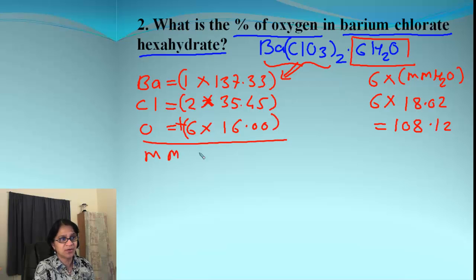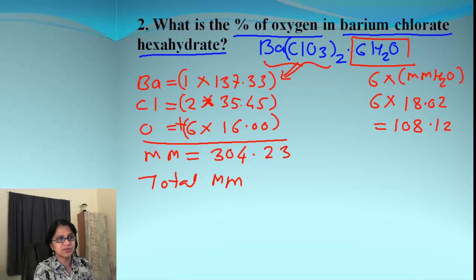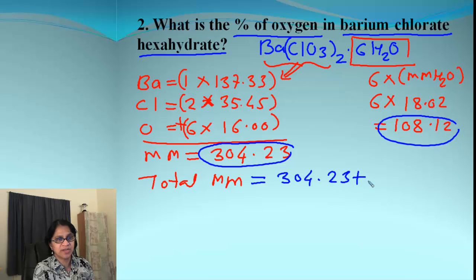And when you multiply and when you add all of those what you get is total molar mass due to barium chlorate which I'm getting as 304.23. Now remember the total molar mass for the compound is adding these two together. This and this together which will be that plus 108.12 giving me the final answer 412.35.